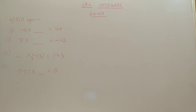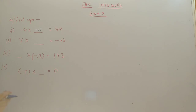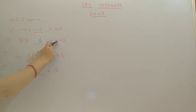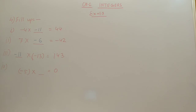Question number 4 is fill in the blanks. First: minus 4 into blank equals 44. In the 4 table, 11 times gives 44. The final symbol is plus. One minus is there, so we need one more minus to make it plus, giving minus 11. Second: 7 into blank equals minus 42. In the 7 table, 6 times gives 42, but we want minus 42, so the blank is minus 6. Third: blank into minus 13 equals 143. 11 times 13 gives 143; the sign must be minus to get plus 143 overall, so the answer is minus 11.